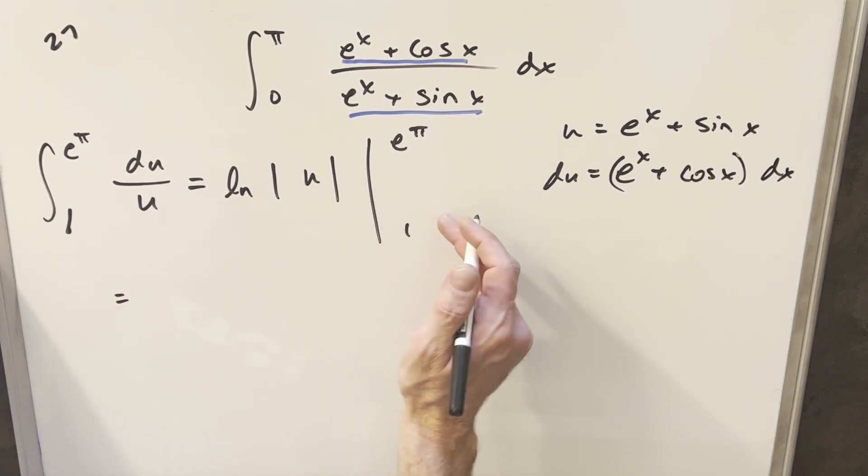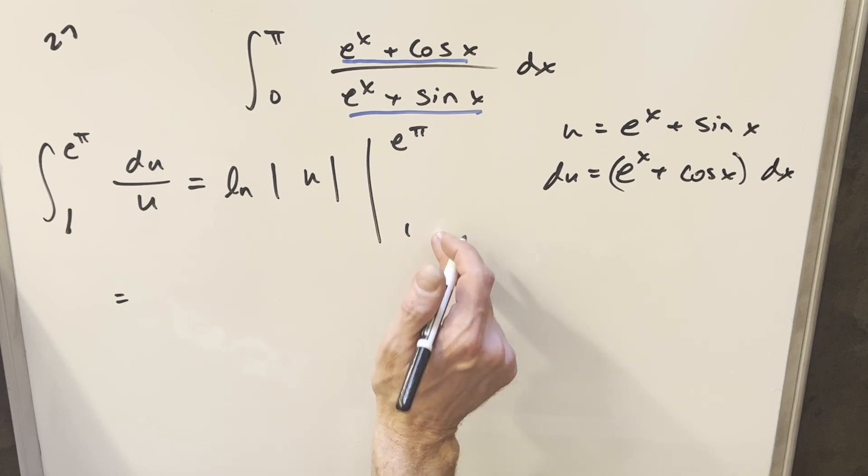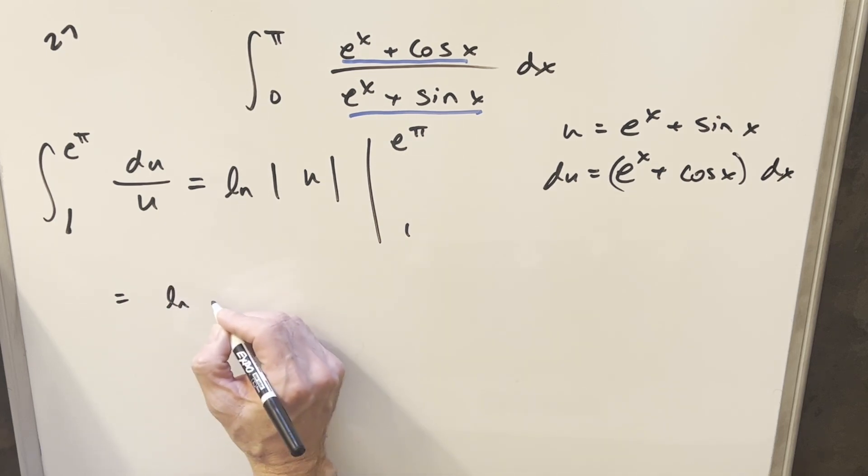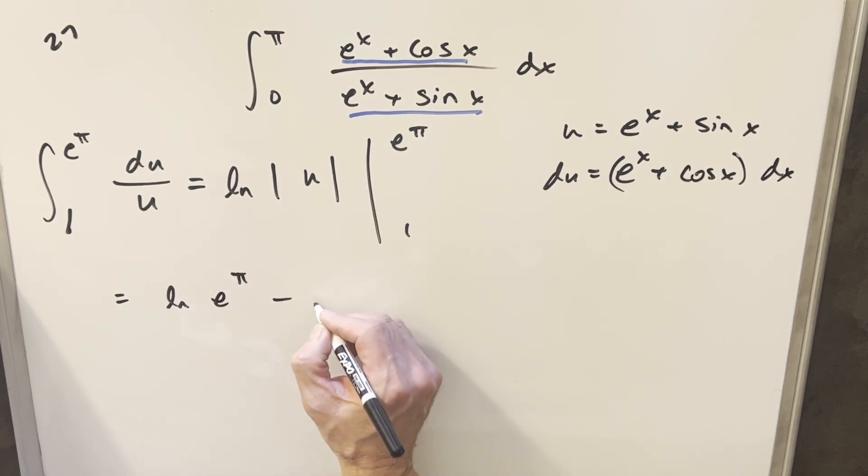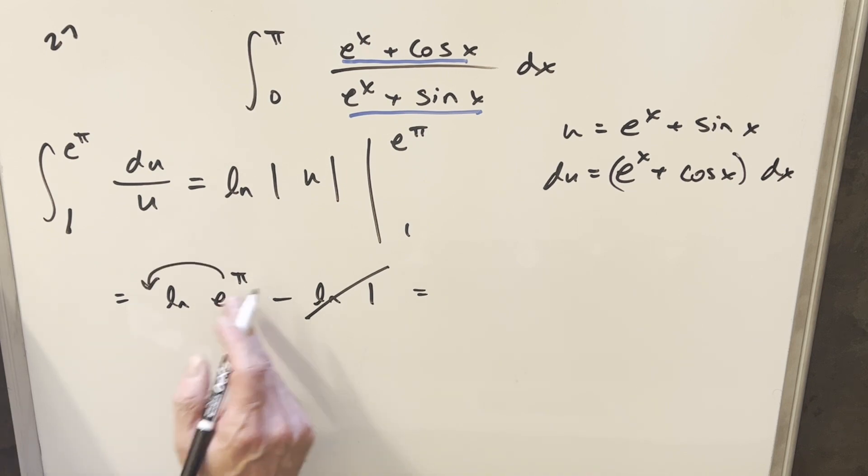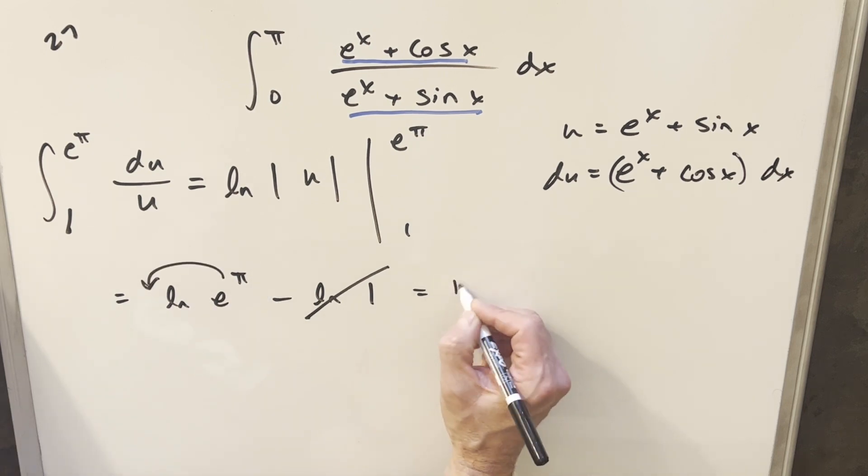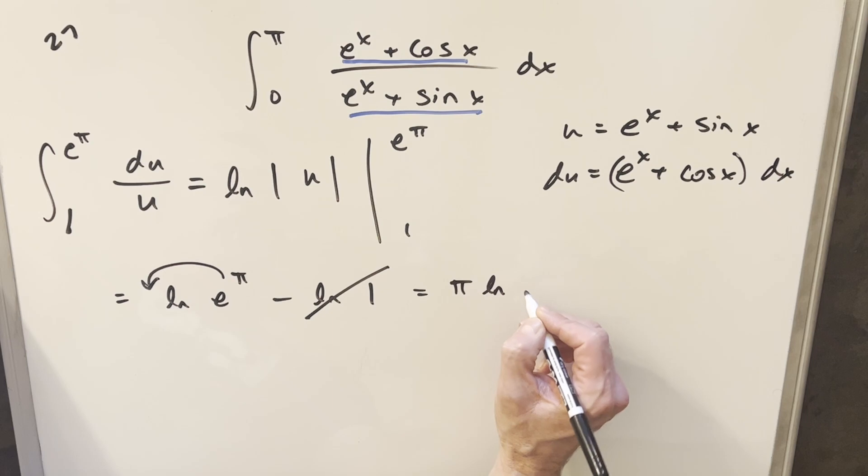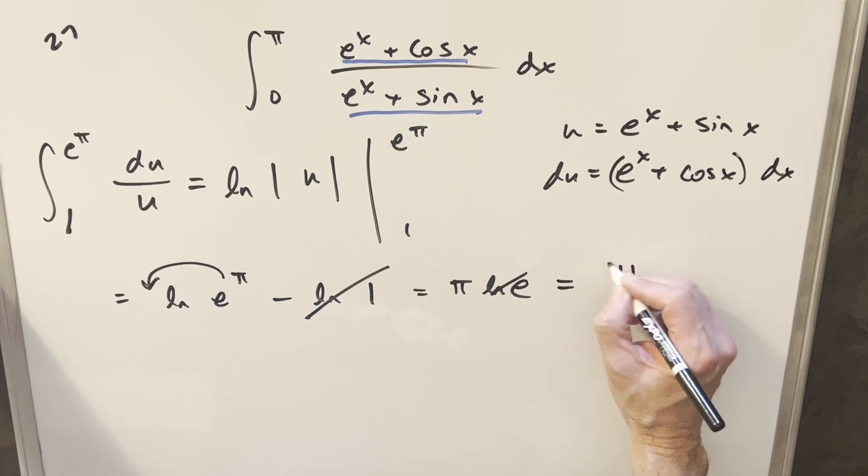Plugging in, I'll drop the absolute value as both are positive. So we have ln(e^π) - ln(1). Now ln(1) = 0, so that goes away. By log properties, we can take the π and bring it up front, so π ln(e). But ln(e) = 1, so our final solution is just π.